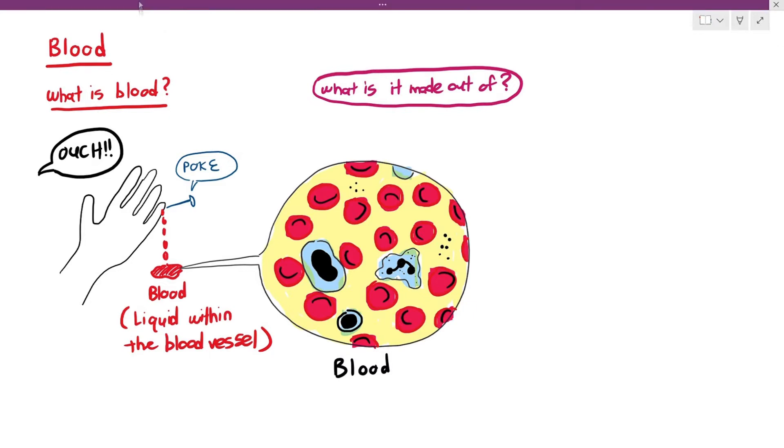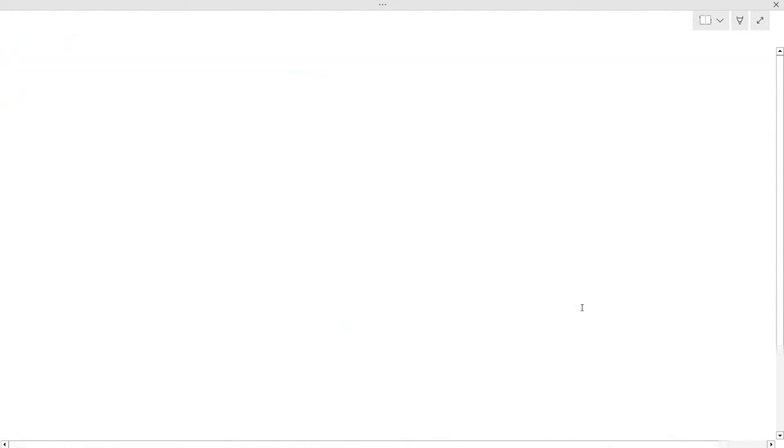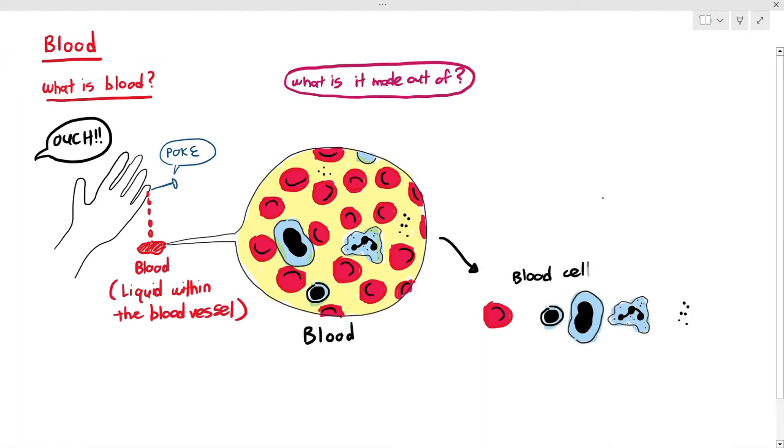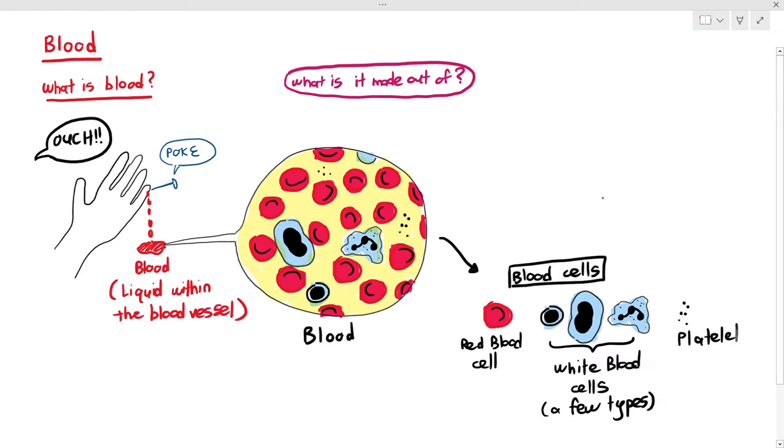The first thing that we can see are the blood cells, and the blood cells are separated into red blood cells, which are red in colour, white blood cells, and also platelets. Now, the white blood cells, there are a few types of white blood cells, but we will not go into its detail for this chapter.